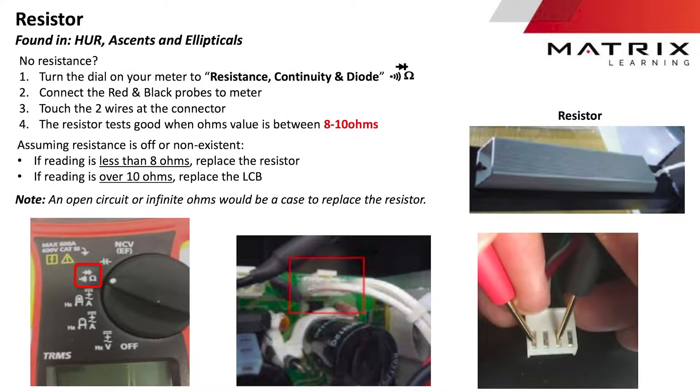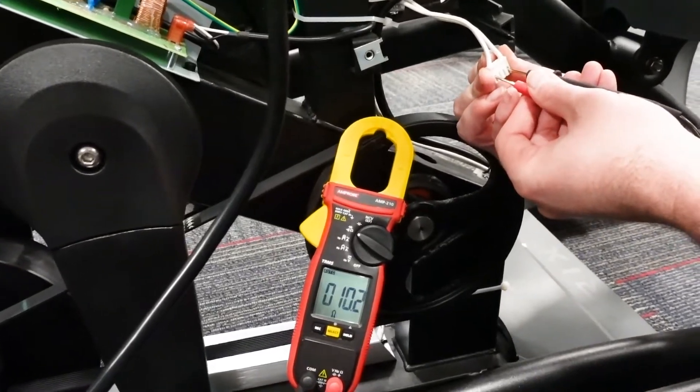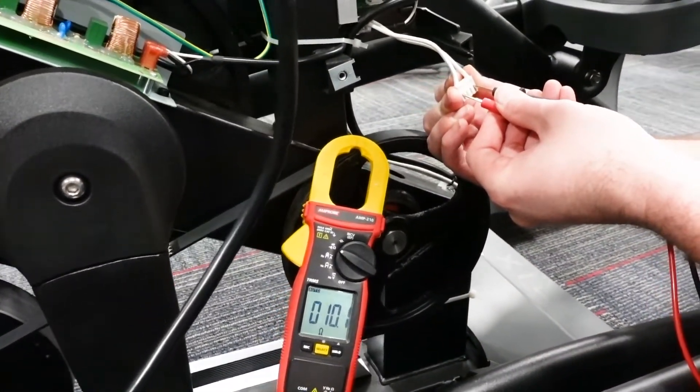Next is a load resistor, found in our ascent trainers, ellipticals, and bikes. Locate the resistor connector by tracing the wires, test resistance across the two wires, should be around 10 ohms.